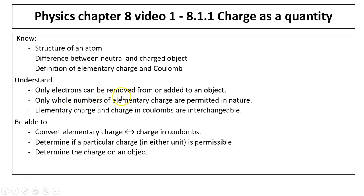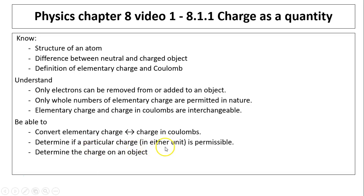You need to understand electrons can be removed from or added to an object — only electrons can be removed or added. Only whole numbers of elementary charge are permitted in nature. Elementary charge and coulombs are interchangeable — those are the two units of charge you can convert. You have to be able to convert between the two, determine if a particular charge is permissible, and determine the charge on an object.